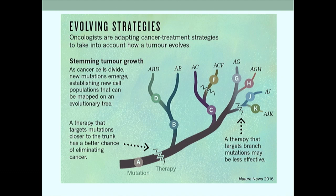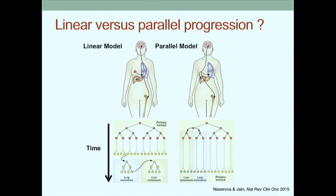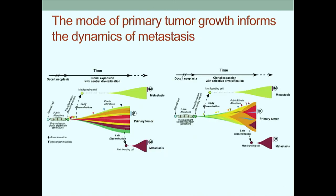This raises the question of what we should be targeting. In tumors evolving neutrally, we want to target truncal alterations. In tumors evolving under stringent selection, we may need to go after events on the branches of the tree. This also helps resolve a long-standing debate about whether metastatic progression evolves in a linear or parallel fashion - are we dealing with a genetically advanced population seeding distant metastases, or are they evolving in parallel? The mode of primary tumor growth is fundamental for understanding metastasis dynamics, and if we don't model this appropriately, we're likely to arrive at an erroneous conclusion.